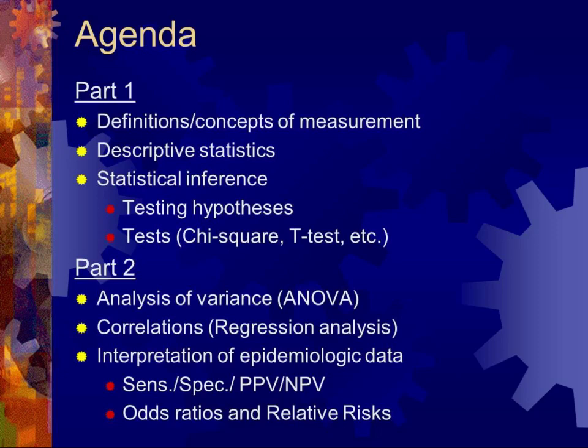What I'd like to do tonight is to go through very briefly chi-square and t-tests so you can review that, and then spend the majority of our time on analysis of variance, correlations, and interpretations of some basic epidemiologic data such as sensitivity, specificity, positive predictive value, and negative predictive value.